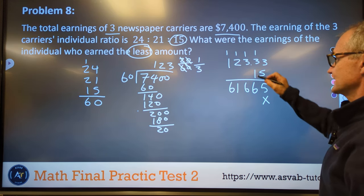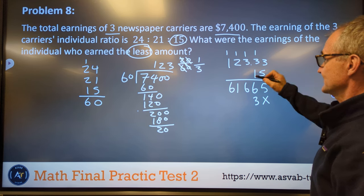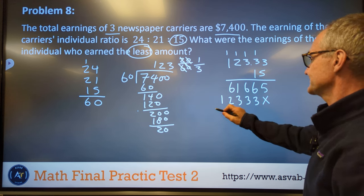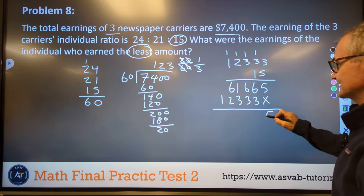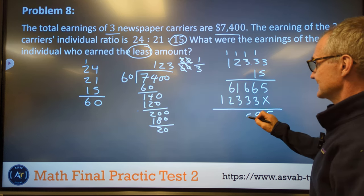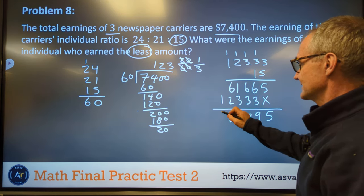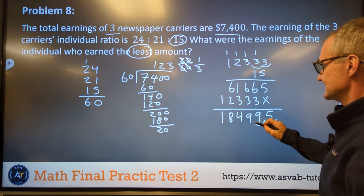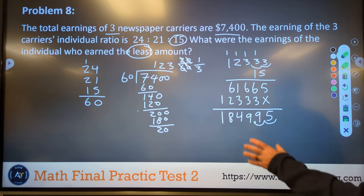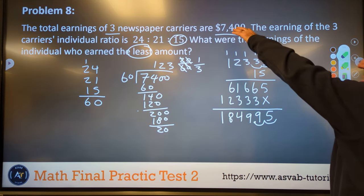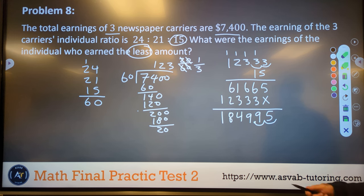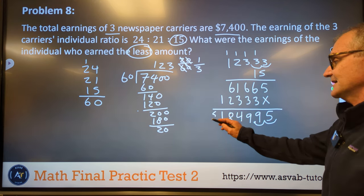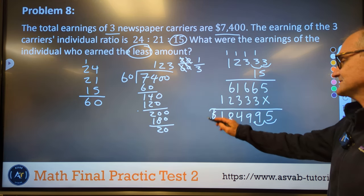Here's my placeholder. Then my 1 times 3. 1 times 3. 1 times 3. 1 times 2. 1 times 1. I add these together to get 5, 9, 9, 4, 8, and 1. I have 1, 2 decimal places over. 1, 2. See if this even makes some sense. The three people together make $7,400. The least earner at a ratio of 15 to 21 to 24 makes $1,849.95.